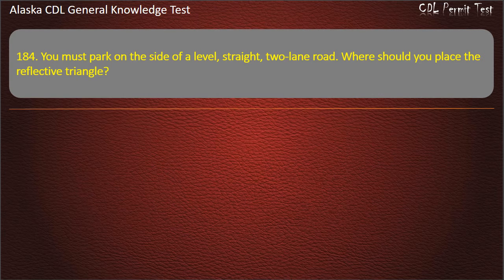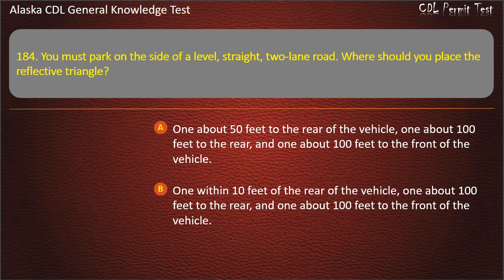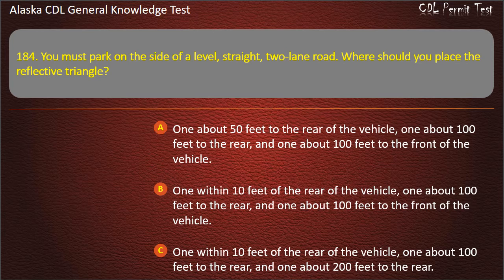Question 184. You must park on the side of a level, straight, 2-lane road. Where should you place the reflective triangle? One within 10 feet of the rear of the vehicle, one about 100 feet to the rear, and one about 100 feet to the front of the vehicle. Answer: One within 10 feet of the rear of the vehicle, one about 100 feet to the rear, and one about 100 feet to the front of the vehicle.